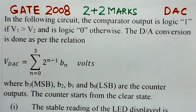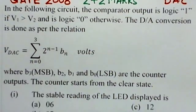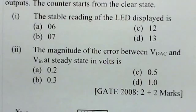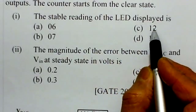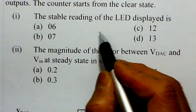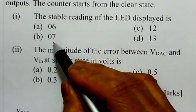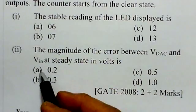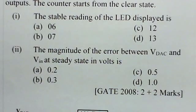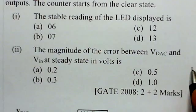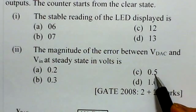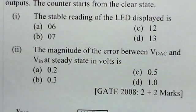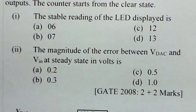First, we have to find the stable reading of the LED display. Options are 06, 07, 12, or 13. Second, the magnitude of the error between VDAC and VIN at steady state in volts. Options are 0.2, 0.3, 0.5, or 1.0. These are the two problems you have to determine.